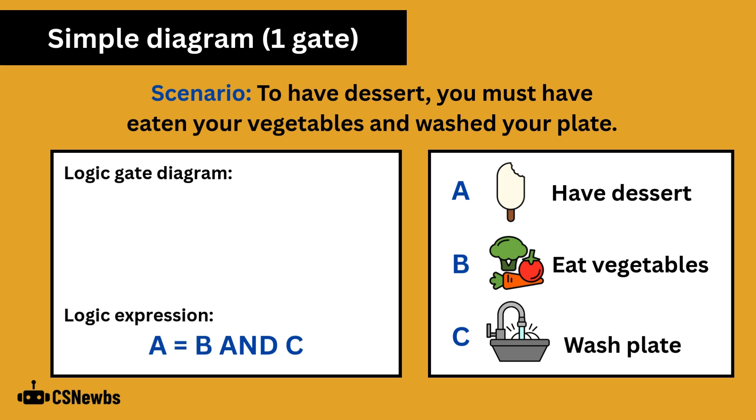This expression can be represented as A equals B and C. You can only have dessert once you have done both B and C. You've eaten your vegetables and you've washed your plate. To represent this in a logic gate diagram we need the AND operator's logic gate and we've got our two inputs B and C going into it and our single output having the dessert A coming out from it.